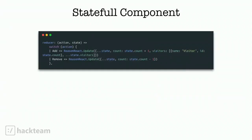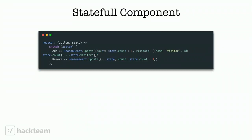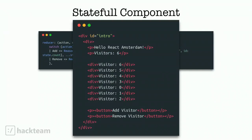Another thing from the strongly typed system: if you use the spread function to spread the state inside your mutated state, I added something to increment the number of visitors and add a new visitor object to our array. We would get an error in our terminal stating 'all the fields are already explicitly listed in this record, so you can remove the spread'. We only have two parameters in our state — count and visitors — so we don't need the state spread anymore. Reason updates you with this kind of information, so we can just remove the spread and it will compile fine.